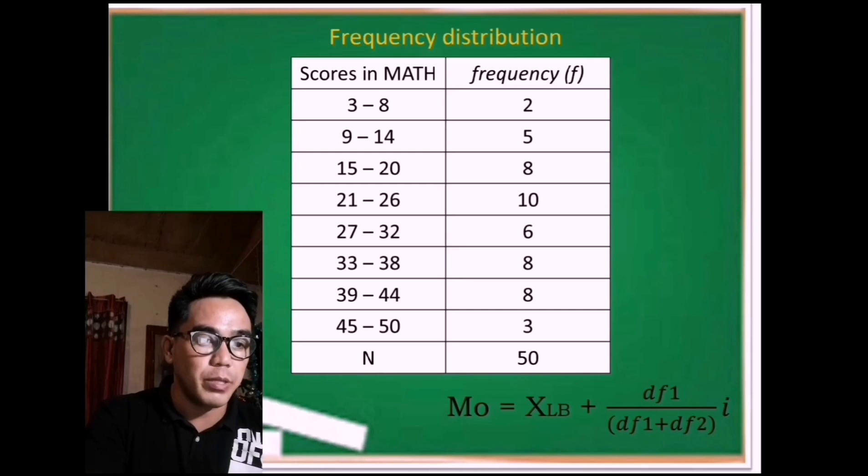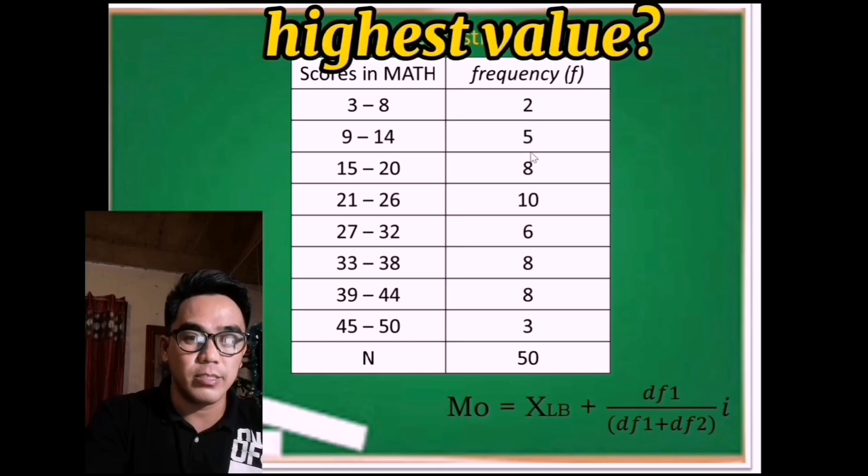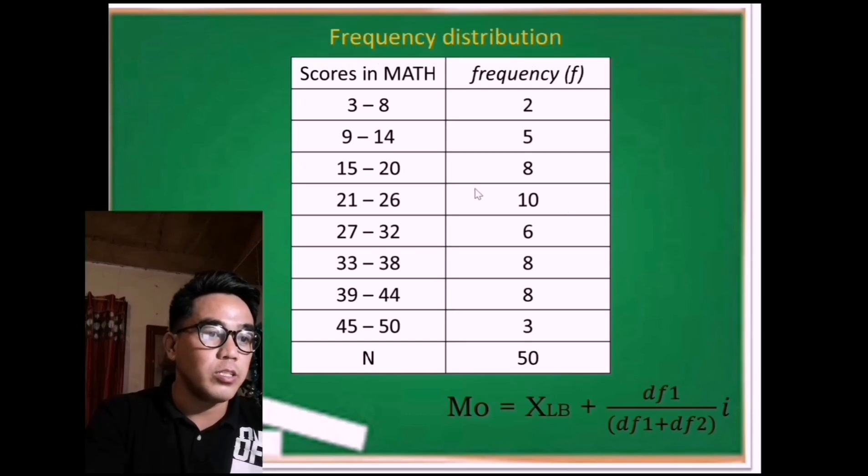Let's start with the XLB. How can we find the XLB here? First, we need to know the modal class row. Which of the frequency has the highest value? That is 10. Therefore, this fourth row will be our modal class.